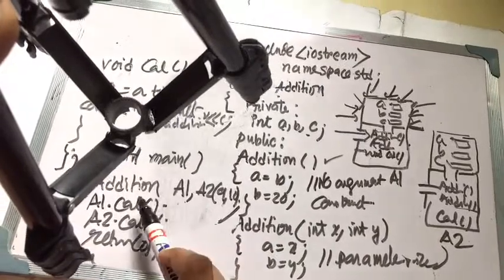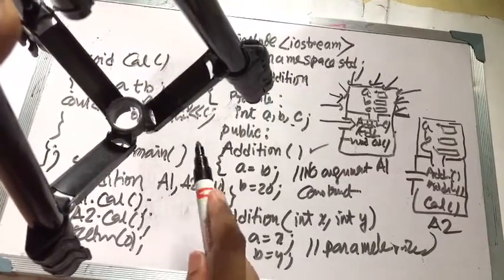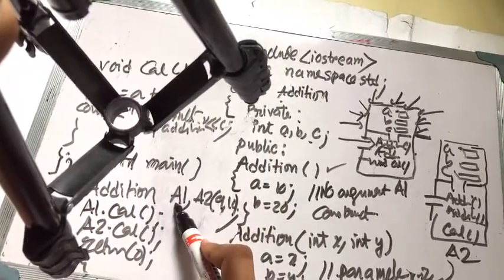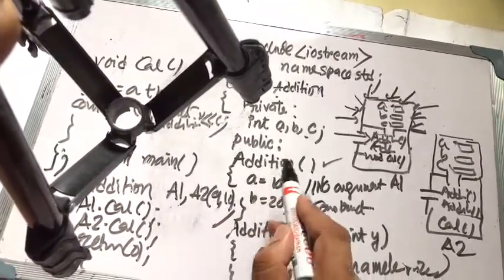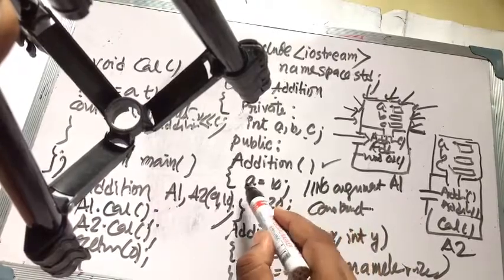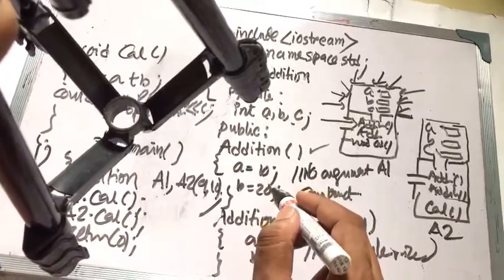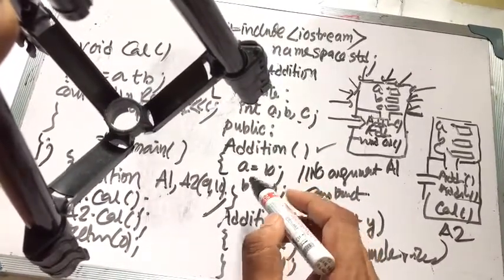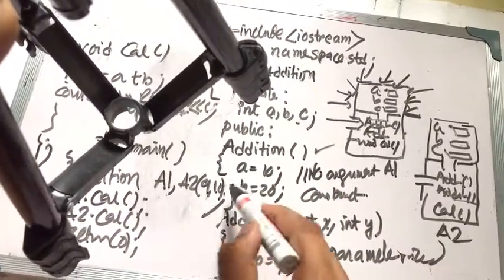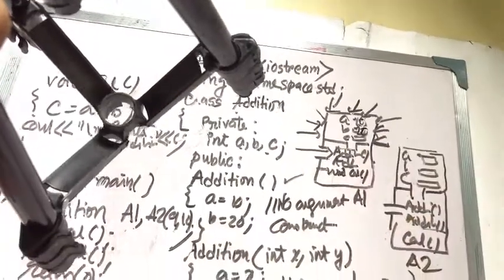When we create object a1, the constructor is a special member whose name is same as the class name, so the no-argument (default) constructor is automatically called. Inside, a is initialized to 10 and b is initialized to 20 — these are automatically initialized by the constructor.